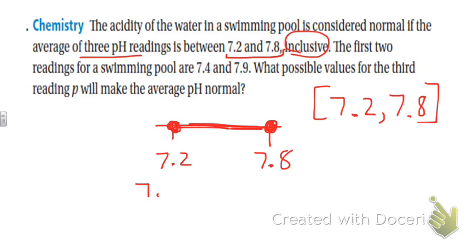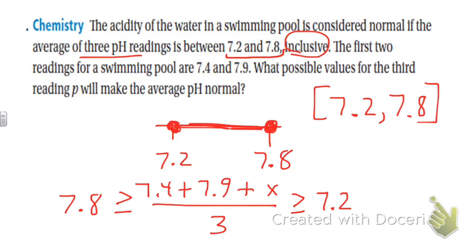So 7.4 plus 7.9 are my first two numbers, plus another number divided by three has to be in the range of 7.2 to 7.8. So it has to be greater than or equal to 7.2, and then it has to be less than or equal to 7.8. You can flip this whole thing over if you want, but essentially you come up with two little inequalities here that you can solve. Kind of tricky, so I'm going to add these two together.